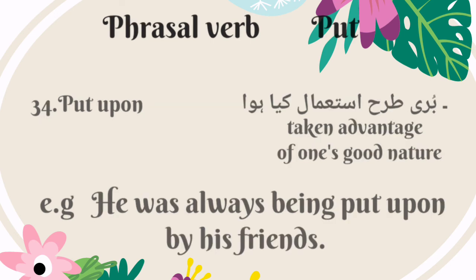The next phrasal verb is 'put upon.' It means to take advantage of one's good nature — Urdu mein is ka matlab hai kisi ki achhai se fayda uthana. For example: he was always being put upon by his friends.